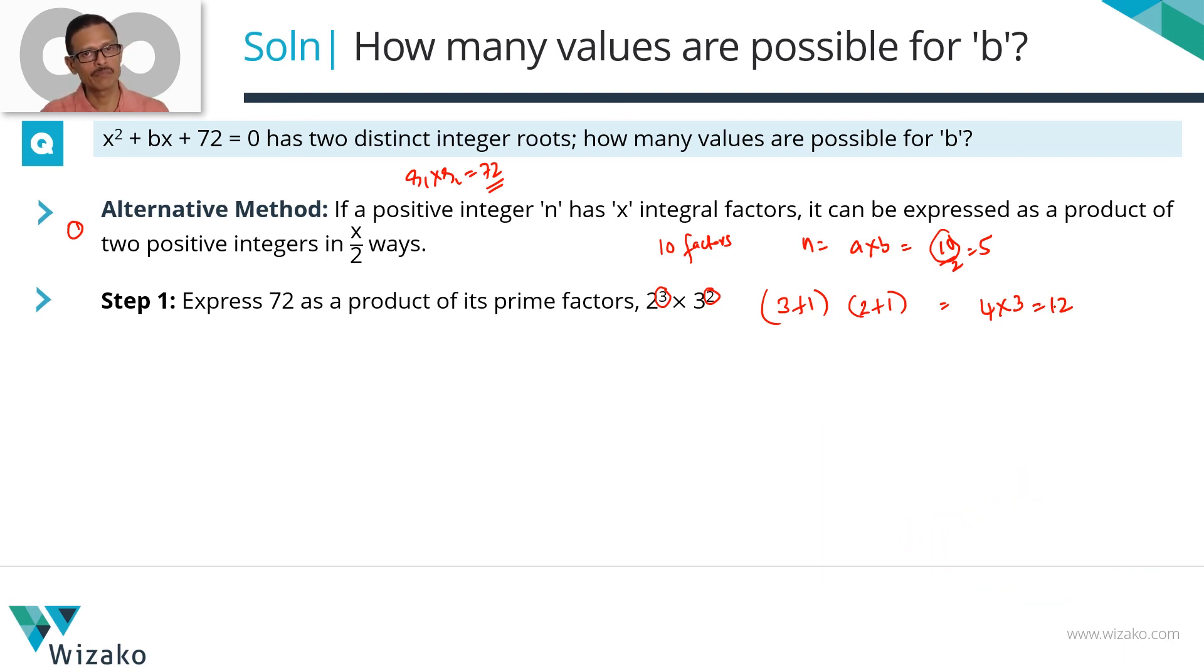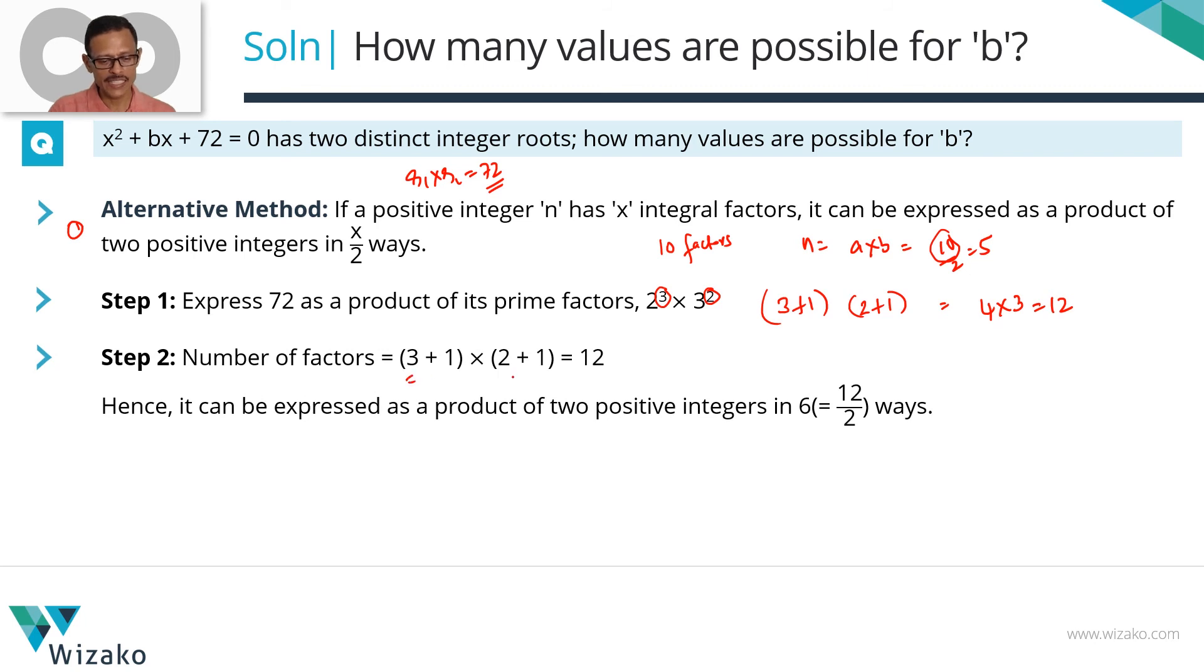We have quite a lot of questions in the number properties question bank which deals with this idea, and we even have videos on the YouTube channel as to why this method is working. For the time being, how to find the number of factors: prime factorize a given number, pick the exponents. The exponents are 3 and 2. Increment each exponent by 1, each power by 1. So 3 becomes 3 plus 1, 2 becomes 2 plus 1. The product of these will give us the number of factors for 72. If the number has x factors, it can be expressed as a product of 2 numbers in x by 2 ways. So if 72 has 12 factors, it can be expressed as product of 2 numbers in 6 ways. I've been mentioning product of 2 numbers all the while. Let me make a distinction there: product of 2 positive integers in 6 ways.